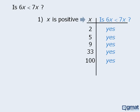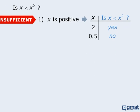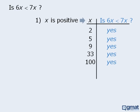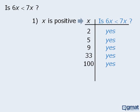Let's compare these results to the results in the last question. In that example, we showed that when x equals 2 the answer to the target question is yes, and when x equals 0.5 the answer is no. Since we have two conflicting answers, we can be certain that statement 1 is insufficient. In this example with 6x and 7x, the best we can do is say that statement 1 seems sufficient, but we can't really be certain unless we try every positive value for x, which we can't do.